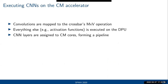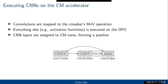To execute convolutions on this accelerator, we map the convolution operation to a matrix-vector operation. The convolution is by far the most expensive operation computationally in these networks; everything else is executed on the digital processing unit. The different layers of the network are assigned to different cores, forming a pipeline. For example, with two convolutions and one addition, the first convolution runs on the crossbar of core one, the second on core two, and the residual addition on the digital unit.